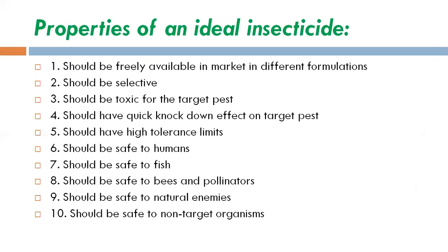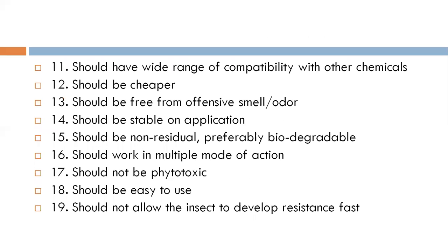Now let's discuss the properties of an ideal pesticide or insecticide. Good pesticides are freely available in the market in different formulations. An ideal pesticide should be selective to the pest — toxic only to the target pest — and should have a knockdown effect on the target pest with high tolerance limits. It should be safe to humans, fish, honeybees, pollinators, non-target animals, natural enemies, and non-target organisms like different vertebrates. It should also have a wide range of compatibility with other chemical pesticides and should be cost-effective.